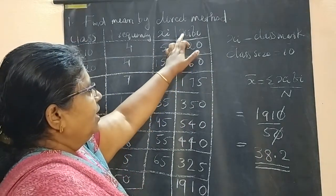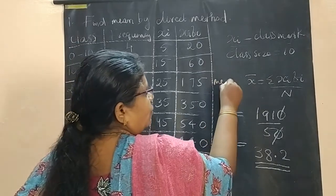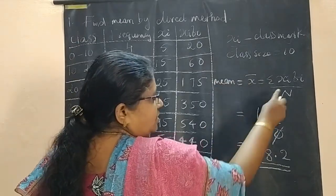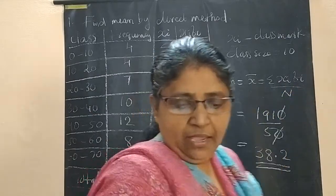And next column is xi·fi. Then apply the formula. Mean x̄ = Σ(xi·fi) / N.